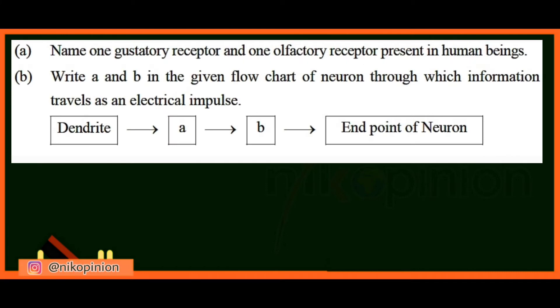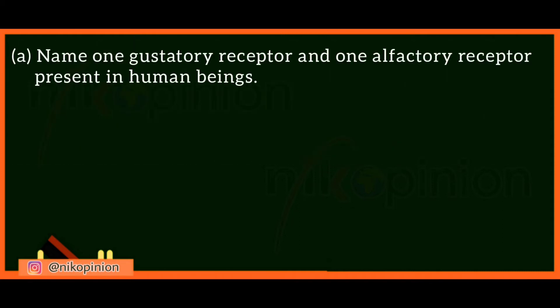The question was divided into two parts. In the first part, they have asked to name one gustatory receptor and one olfactory receptor present in human beings. The second question is to write A and B in the given flowchart of neuron through which information travels as an electrical impulse. So first of all, I will cover the answer of the first question.